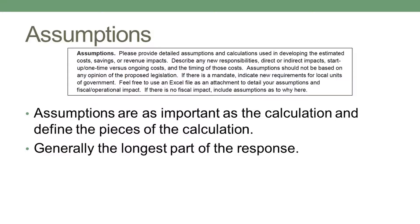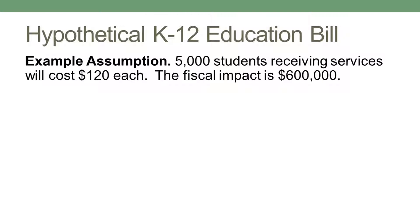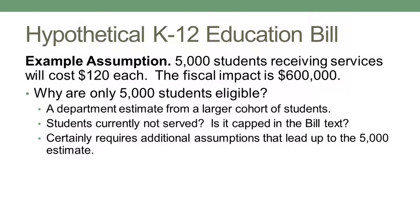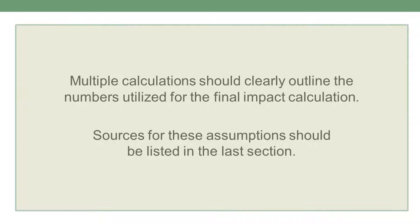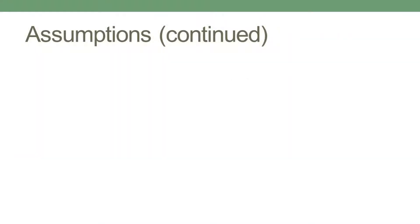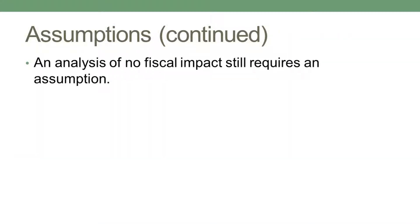For example, if I receive an estimate of $600,000 for providing K-12 students with educational widgets, and the final calculation is 5,000 students times $120, I will look to the assumptions section for some answers. I'll want to know how you arrived at the number of students — why is it only 5,000? That may require you to include one or more additional calculations to explain. I'll also want to know how you arrived at the $120. Is that a hard number provided by the widget vendor? Is it your estimate or someone else's? If it's an estimate, what's it based on? Additional calculations may be needed, and sources of estimates should be included at the end of the form. Also, if you believe the legislation has no fiscal impact on your agency, please explain why in this section of the form.